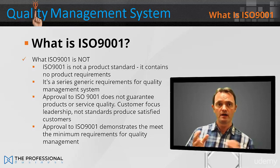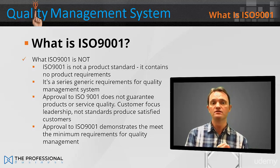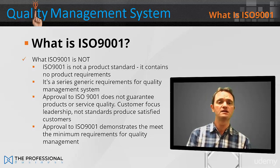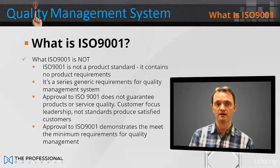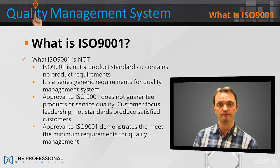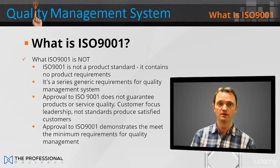Now we've covered what the ISO 9001 is, but we also need to know what it isn't. The ISO 9001 is not a product standard — it contains no product requirements. It is a series of generic requirements for quality management systems. Approval to the ISO 9001 does not guarantee product or service quality; customer-focused leadership, not standards, produces satisfied customers. Approval to the ISO 9001 demonstrates that a company meets the minimum requirements for quality management.